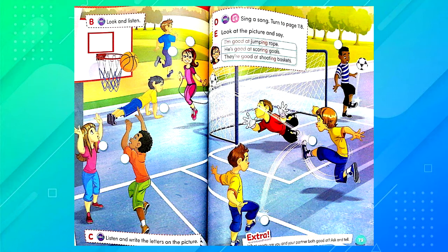Part C — Listen and write the letters on the picture. A: pass the ball. B: shoot baskets. C: jump rope. D: catch the ball. E: score a goal. F: do push-ups.